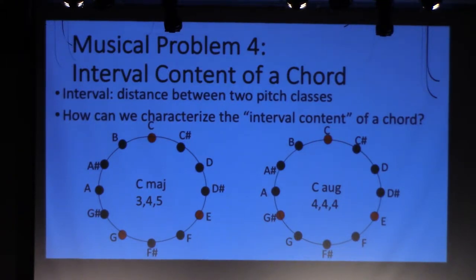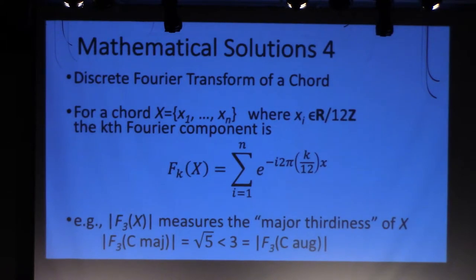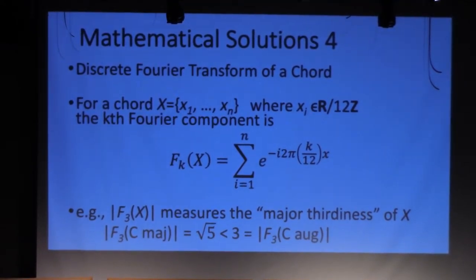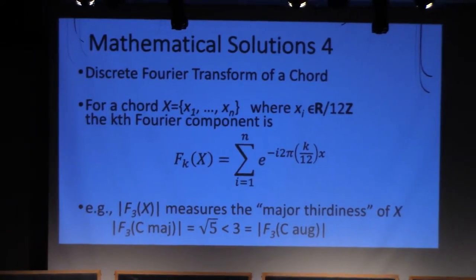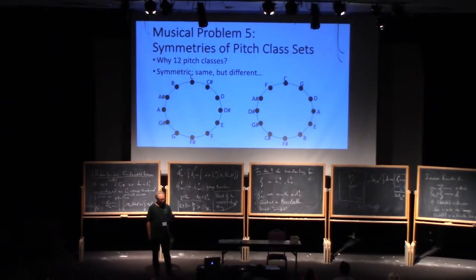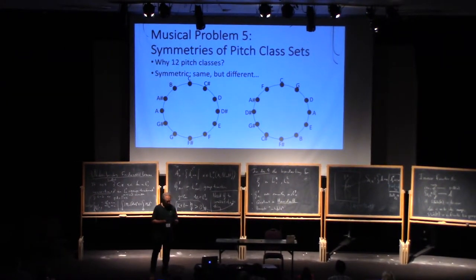A chord is a set of pitch classes sounded together, and an interval is the distance between two pitch classes. The interval content of a chord is a big deal musically. A tool used heavily by music theorists is a kind of discrete Fourier transform. The magnitudes of its components measure the strengths of the various intervals.